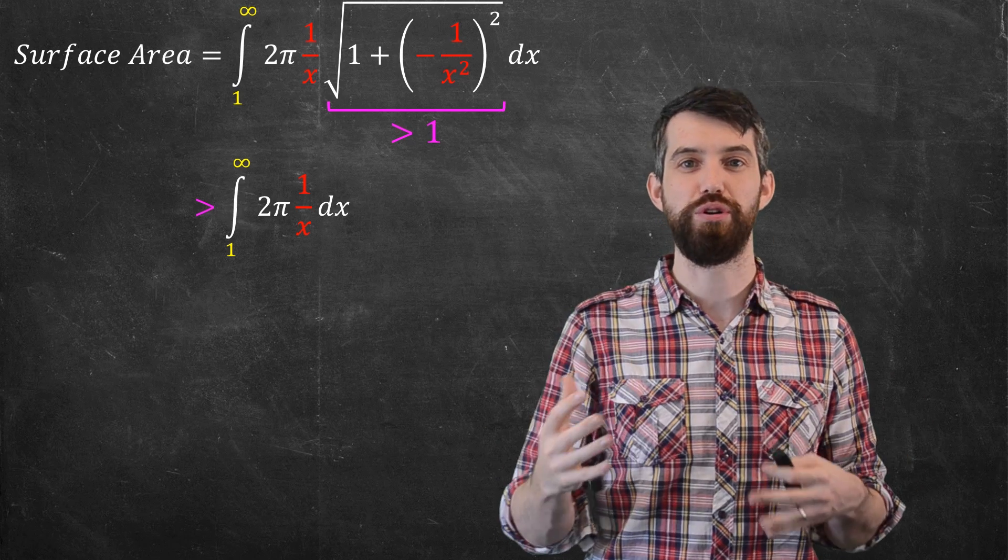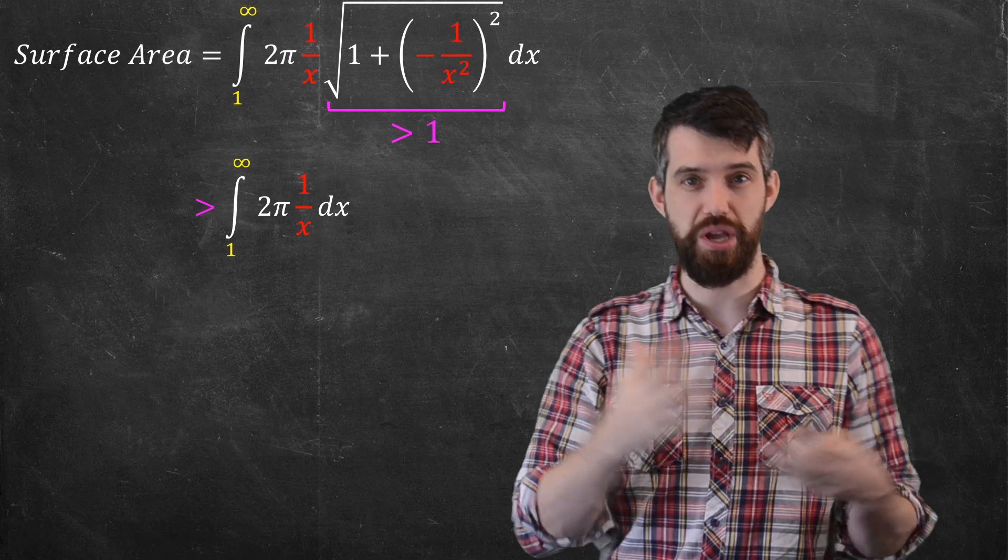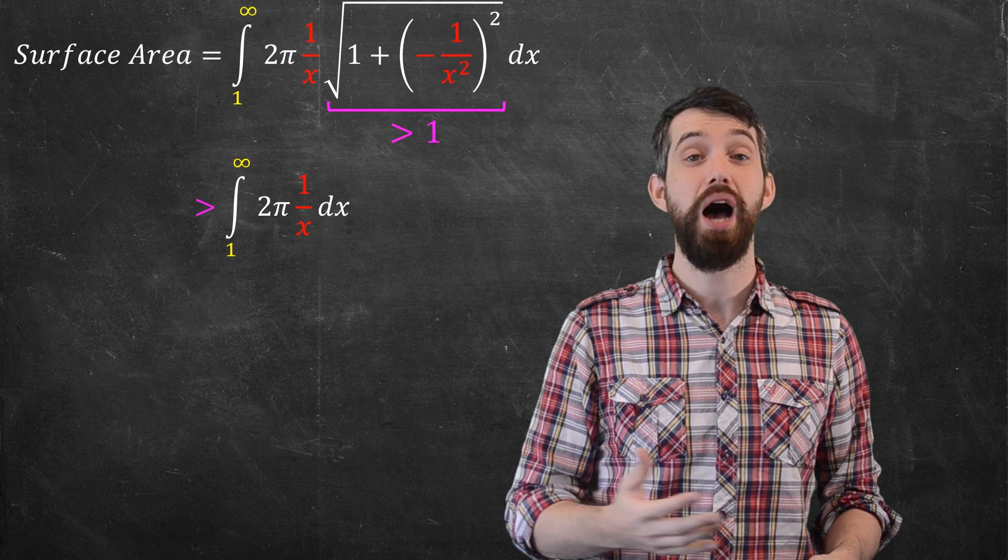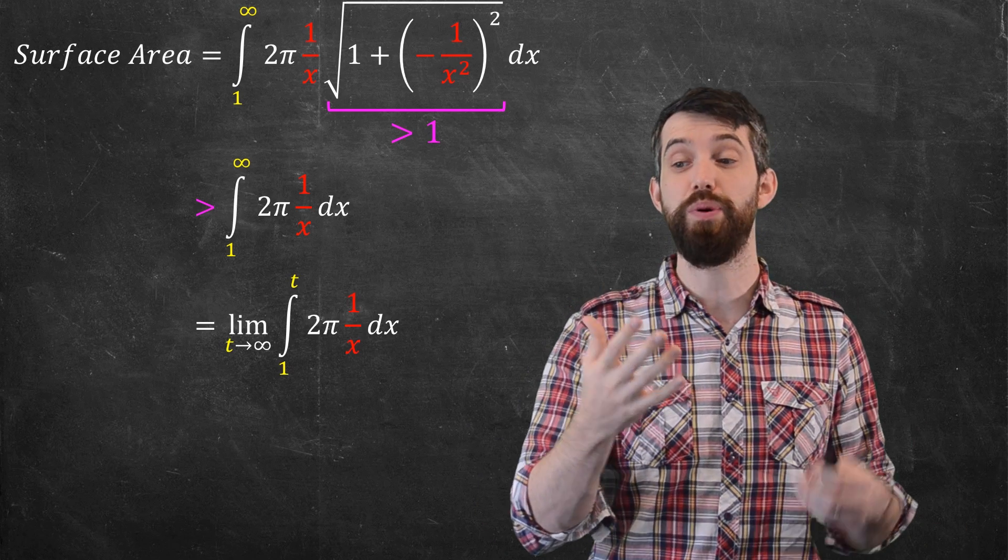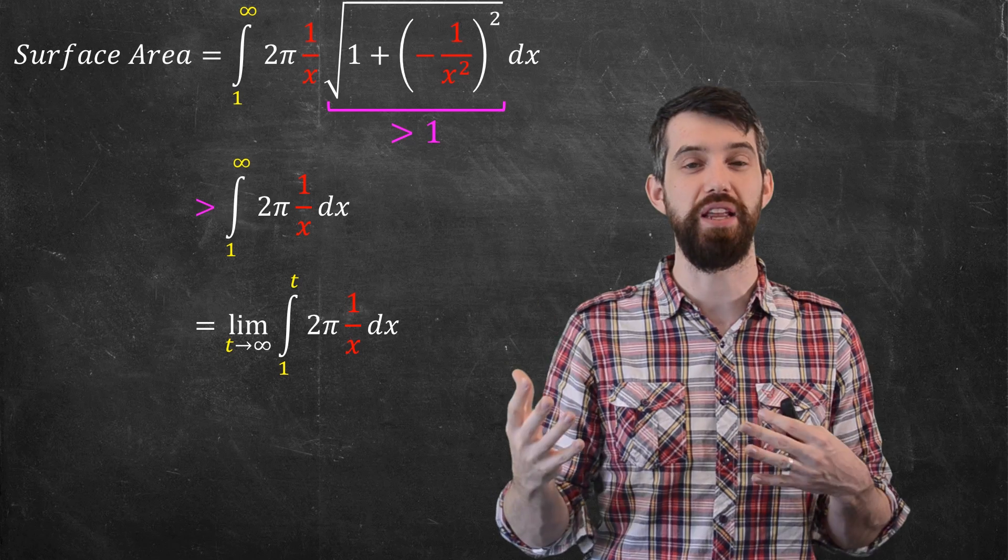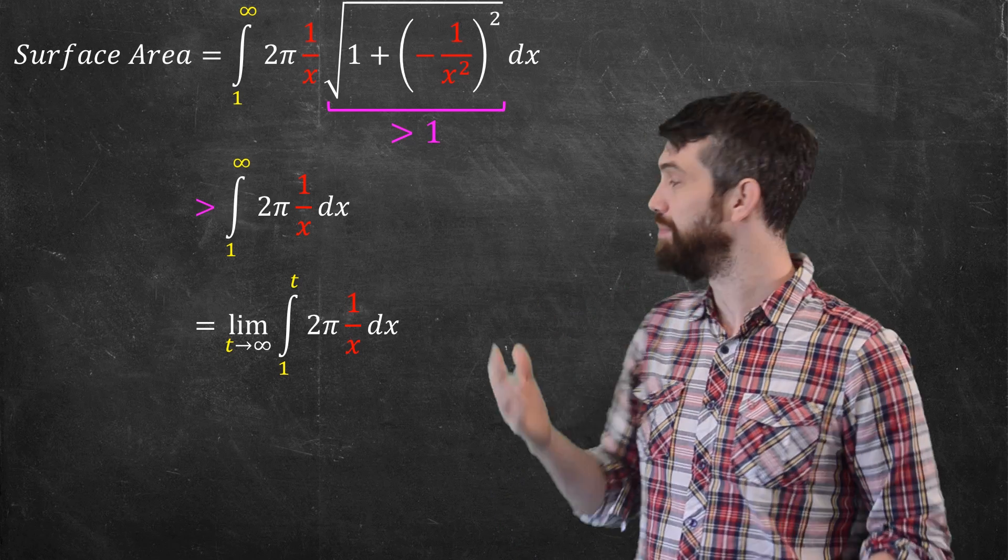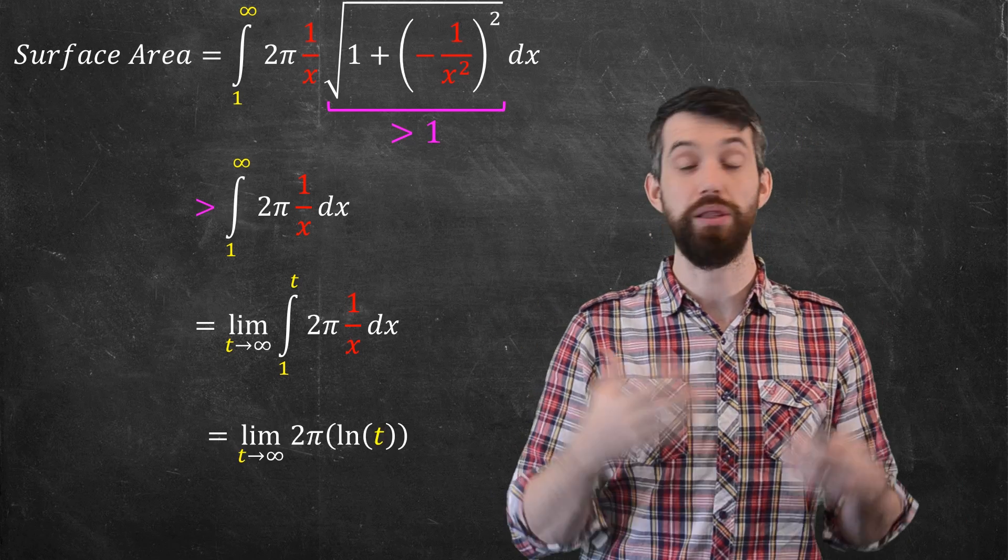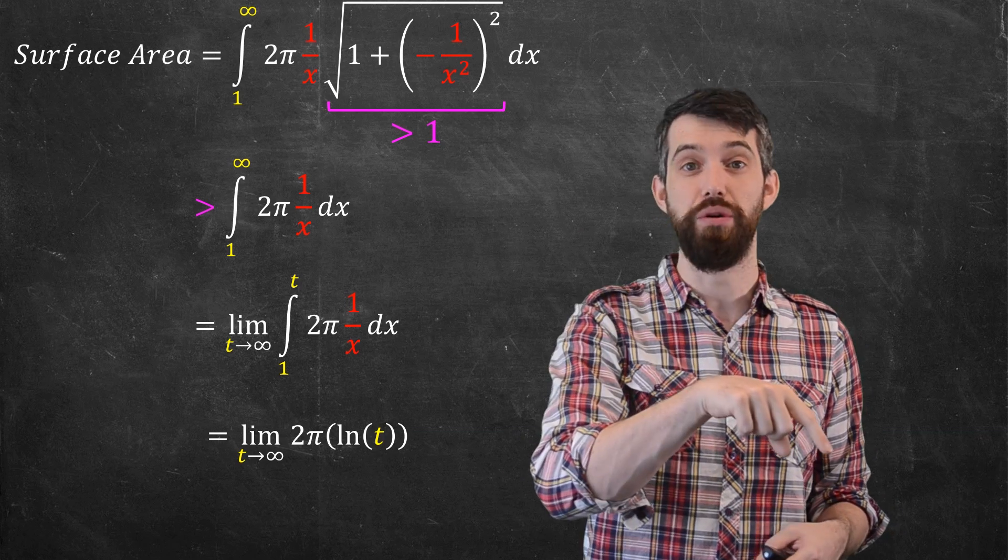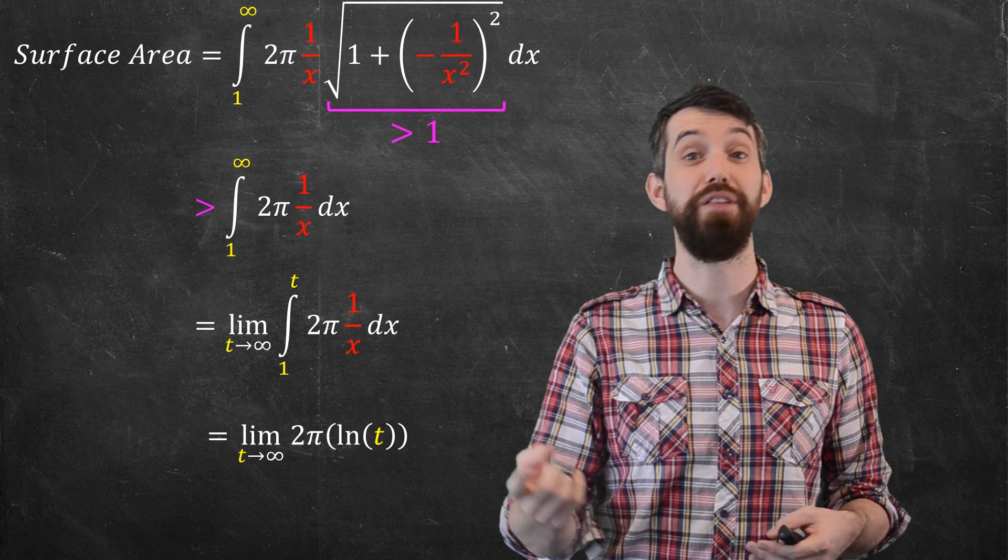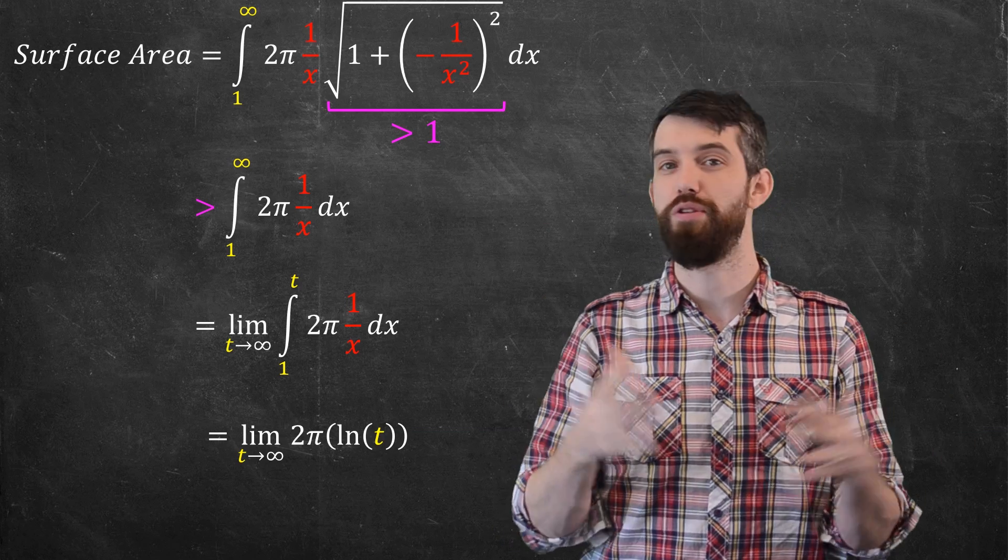But that's one I can do. What was the definition of improper integrals? Well, instead of the infinity up here in one of my limits of integration, I'm going to replace it with t, and I'm going to put a limit as t goes to infinity out the front. And then I can integrate 1 over x. It's going to be logarithm. And I can plug in the value of t, which is always positive. I can plug in the value of 1.